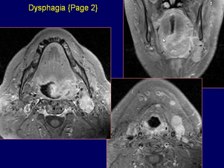Coronal post-gadolinium fat-saturated image reveals extension of the mass superiorly along the lateral left wall of the oropharynx. The mass is also extending inferiorly through the mylohyoid space and into the left submandibular space.